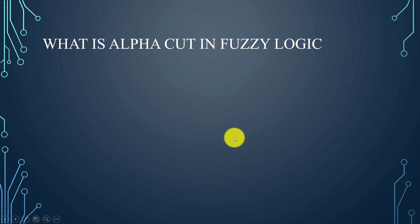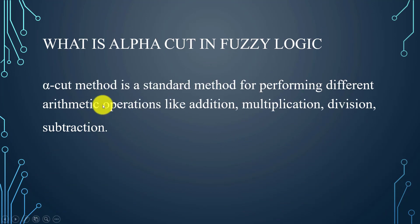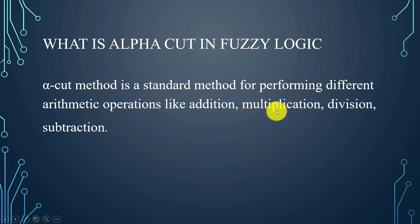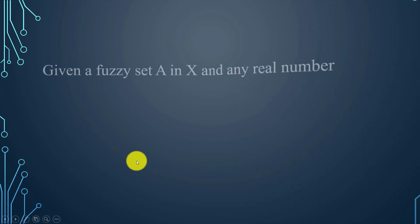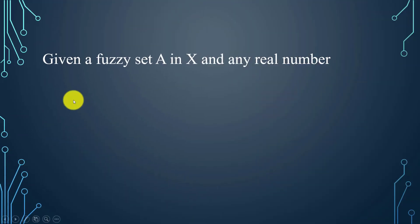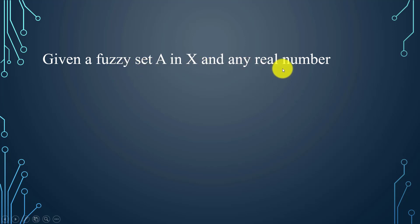Now, what is alpha cut in fuzzy logic? The alpha cut method is used for performing different arithmetic operations — for example, addition, multiplication, division, and subtraction. Alpha cut is defined under a given fuzzy set A in X, and alpha is a real number.